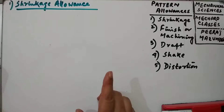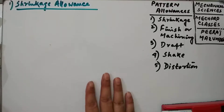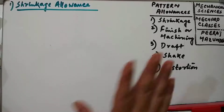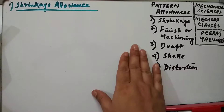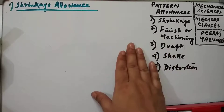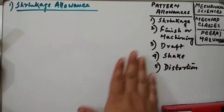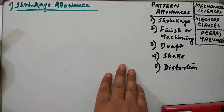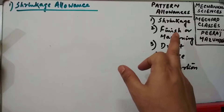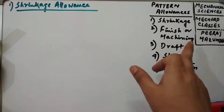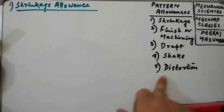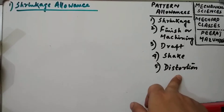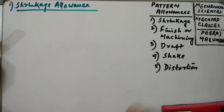First we will discuss the pattern allowances. There are five different types of pattern allowances, namely: shrinkage allowance, finish or machining allowance, draft allowance, shake allowance, and distortion allowance.